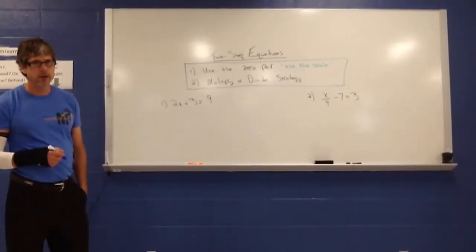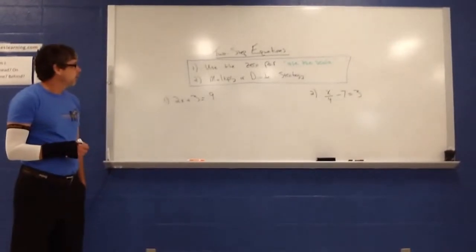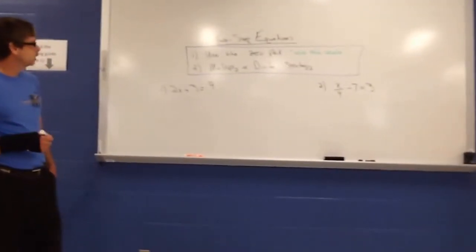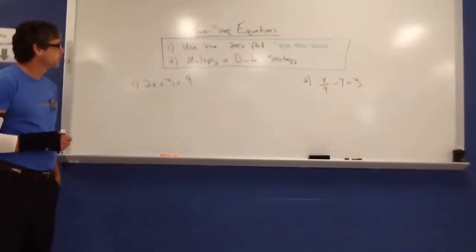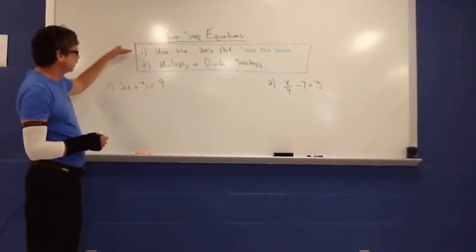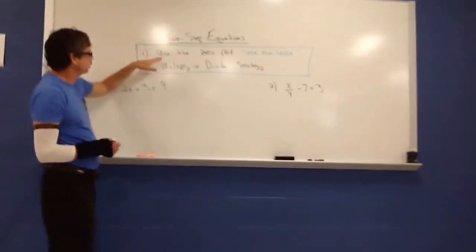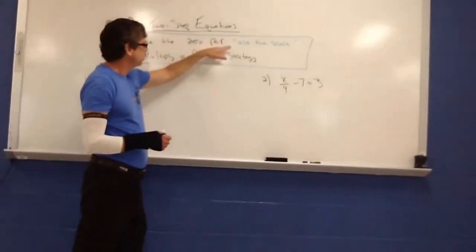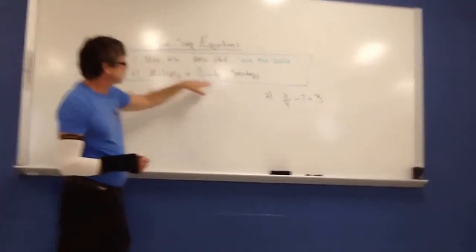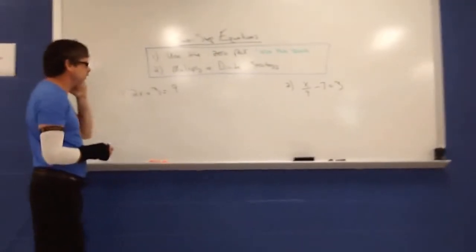Welcome back to First Take Math with Brian Thomas. In today's lesson, we're going to do a couple of examples on solving equations that have two steps. So two-step equations, my strategy is going to be two-pronged. We're going to first use what we call the zero pair. You can also use the scale for that. And then our second step will be to multiply or divide strategy. So let's see how this plays out.